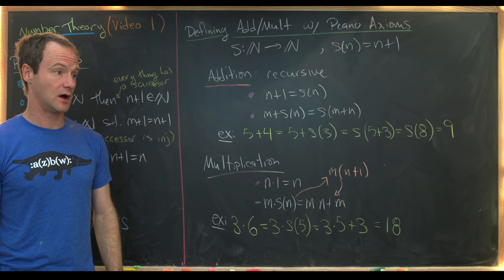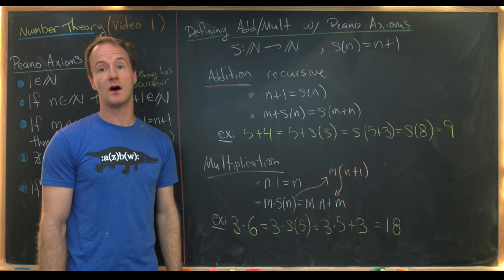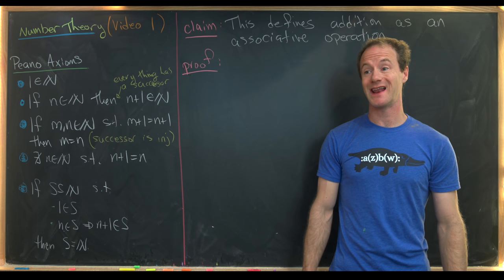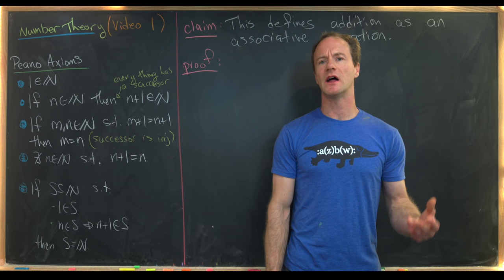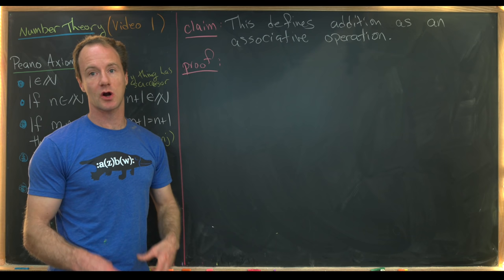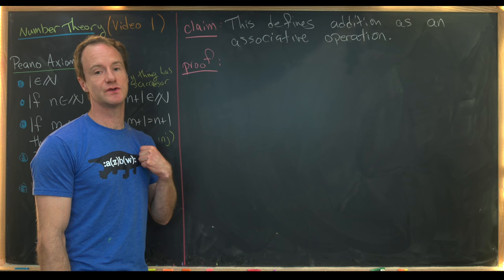These two definitions of addition and multiplication only require us to know how to find the next natural number and then apply the definitions recursively. We just got done using the successor function to recursively define addition and multiplication, but we didn't prove that they satisfy the rules from the first board — like associativity or commutativity. Now we're going to prove some of those, and some will be left as exercises.